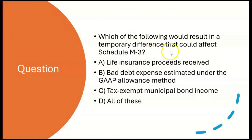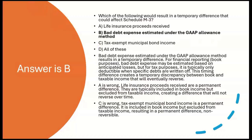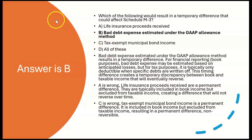Which of the following would result in a temporary difference that could affect Schedule M-3? A: life insurance proceeds received. B: bad debt expense estimated under the GAAP allowance method. C: tax-exempt municipal bond income. D: all of these. The answer is B — bad debt expense estimated under the GAAP allowance method is a temporary difference. For financial reporting, bad debt expense may be estimated based on anticipated losses, but for tax purposes it is typically only deductible when specific debts are written off. This timing difference creates a temporary discrepancy that will eventually reverse.